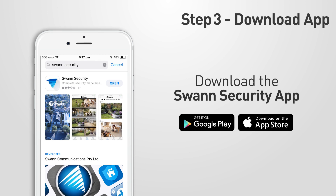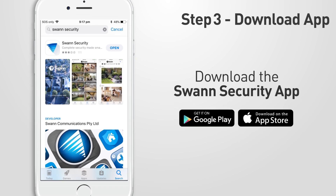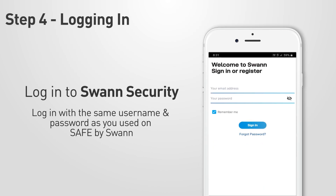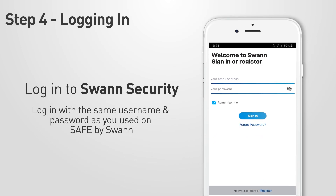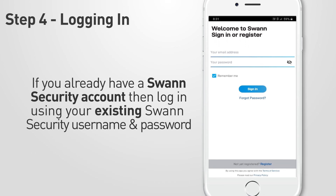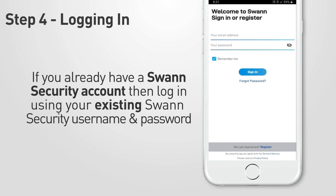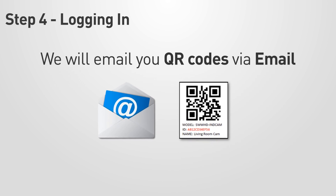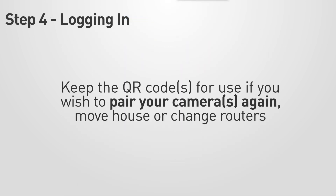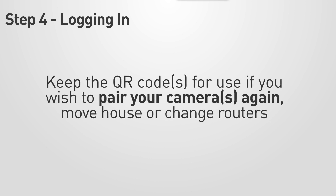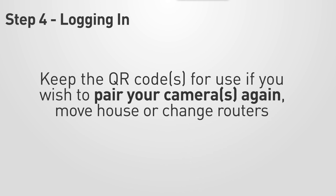Step 3 is to download the Swan Security app from either the App Store or Google Play. Step 4 is to log in to Swan Security with the same username and password you used on Safe by Swan. If you already have a Swan Security account, you will need to log in using your existing Swan Security username and password. Once you have started the transition process, you will be sent an email containing QR codes for your camera, or each camera if you have more than one. You can use these codes if you ever wish to pair your camera or cameras again in the future — this will be handy if you ever move house.